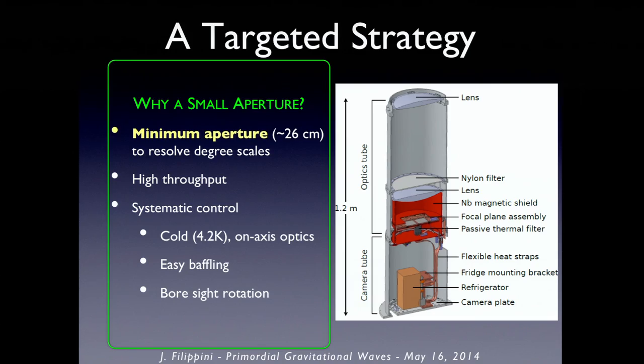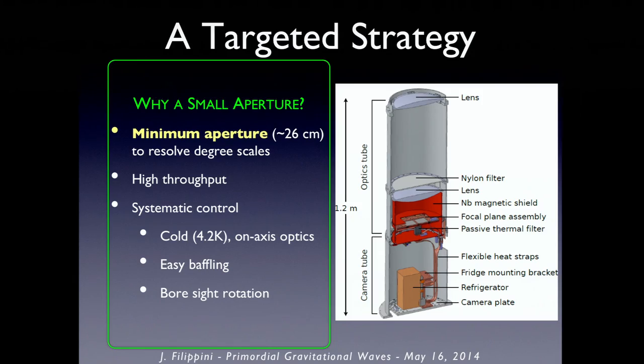The beam is about the size of the full moon on the sky. The instrument is designed for exquisite control of systematics. Everything is cold, reducing emission from the interior. You also have on-axis optics, which means it's manifestly symmetric. You can take this entire telescope and rotate it around its boresight, which helps symmetrize the maps and separate any asymmetry in your telescope from asymmetry on the sky. Because it's compact, it's easily baffled — you can easily defend it from outside light in a way that's hard with a big dish.